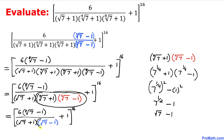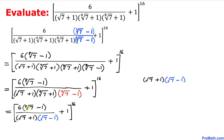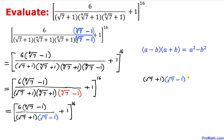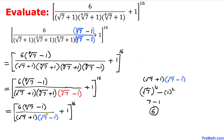Now let's focus on this last part in the denominator. We can see these factors represent the product of a sum and a difference, so using the formula again this becomes the square root of 7, squared, minus 1 squared. The square and square root undo each other, leaving us 7 minus 1, and 7 minus 1 equals 6. Therefore we can replace this denominator part with 6.